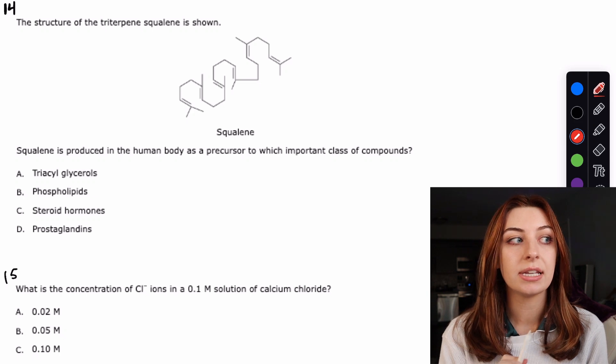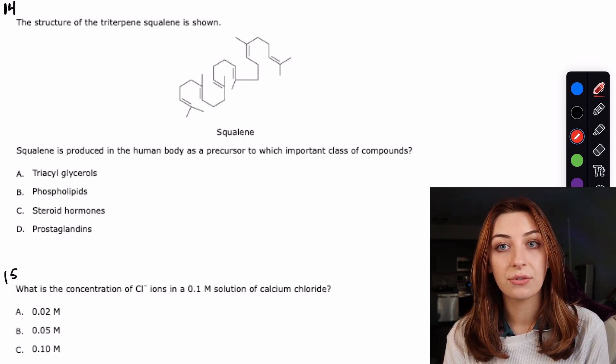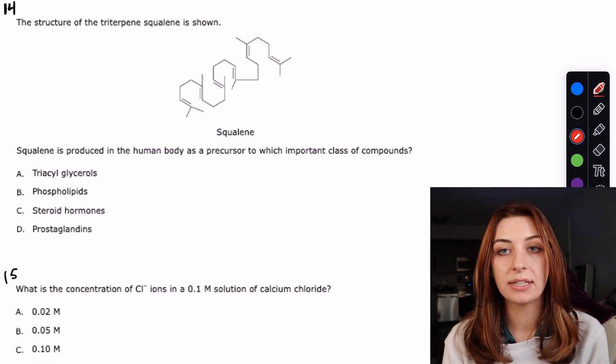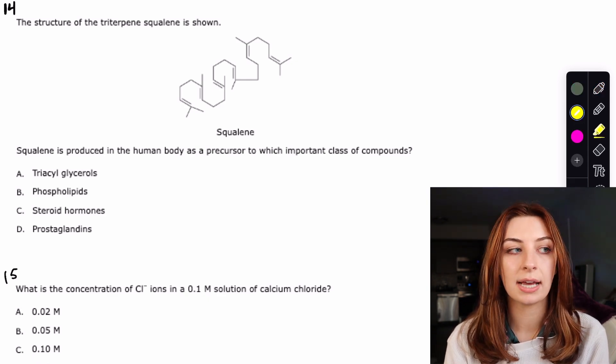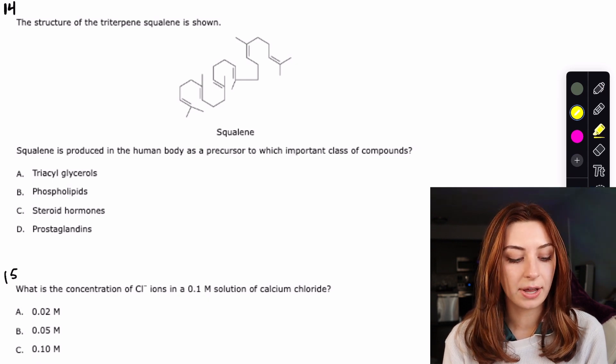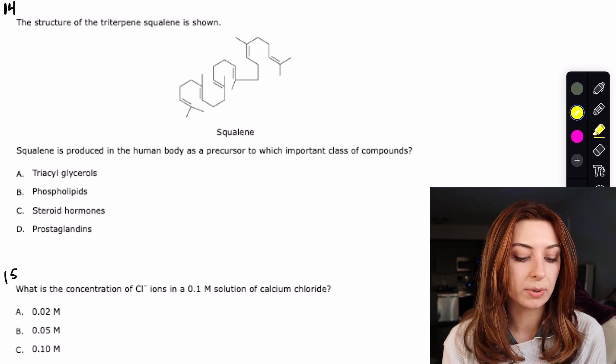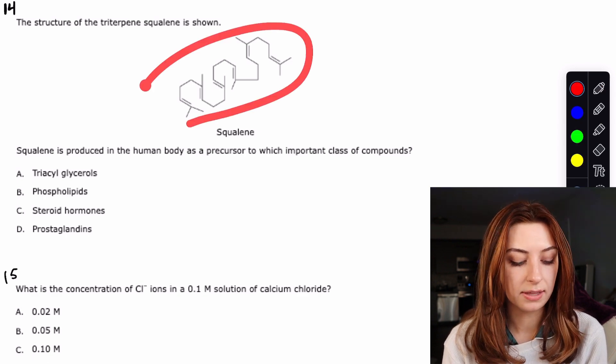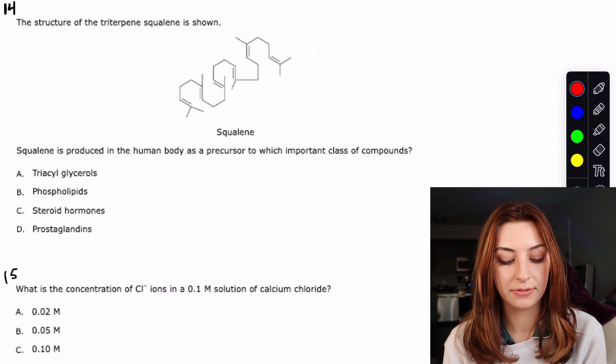Just to be clear this is the unscored sample test not the new FLE5. Okay let's go ahead and get going. Since these don't have a passage associated with them they typically go quicker. If you're curious about the timing you should be spending one minute per standalone question. Number 14 is the first one. It says the structure of triterpene squalene is shown and I can see that. Squalene is produced in the human body as a precursor to which important class of compounds.